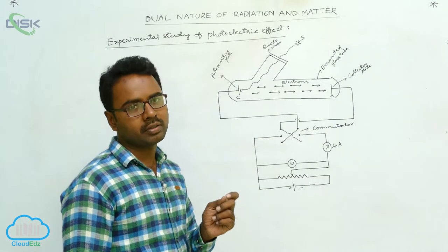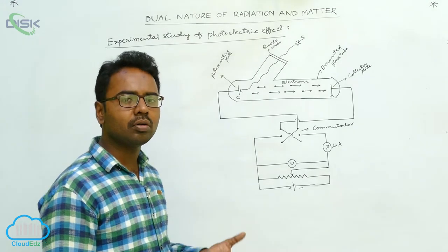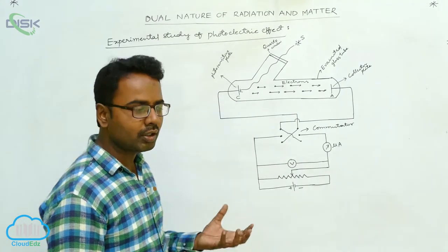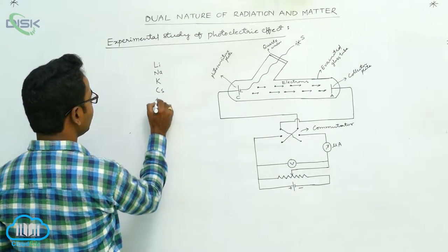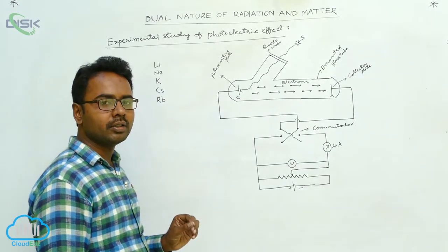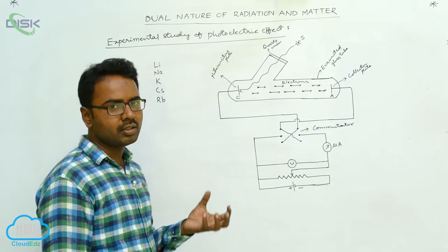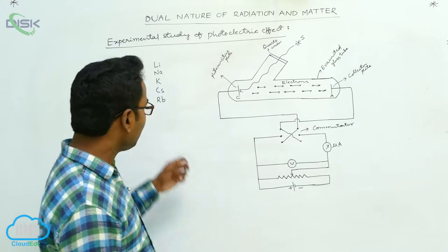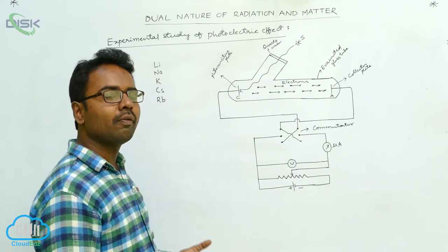The photosensitive plate can emit electrons even with visible light of small frequencies. Alkali metals such as lithium, sodium, potassium, cesium, and rubidium are photosensitive metals — they can emit electrons even with visible light, which has less energy compared to ultraviolet radiation, X-rays, or gamma rays.